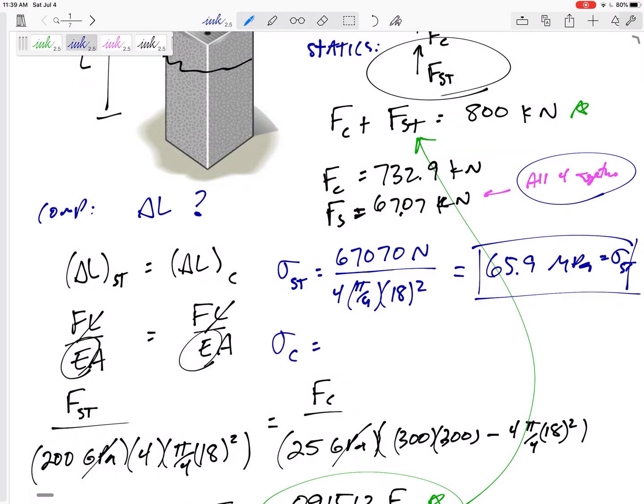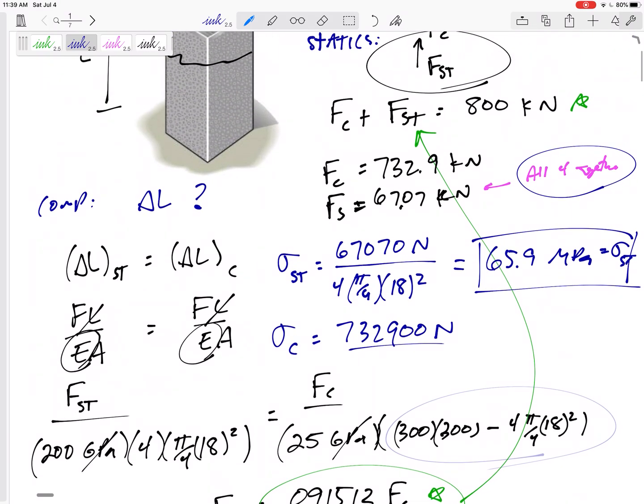And then the stress in the concrete would be 732,900 newtons divided by its area. I kind of already calculated it right here. If I had that number in my calculator, I would just use that, minus the four pi by four, 18 squareds. I've got 8.24 MPa stress in the concrete.